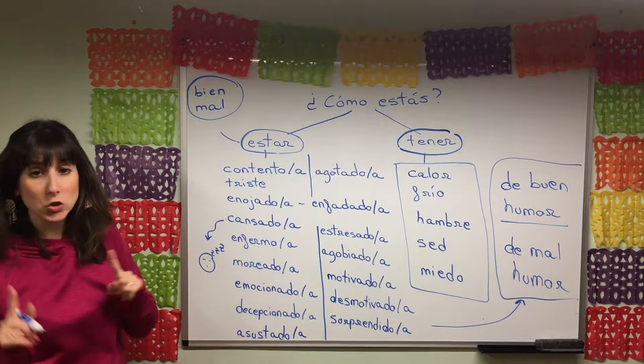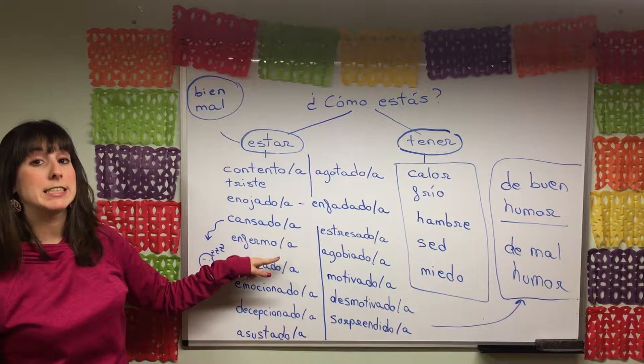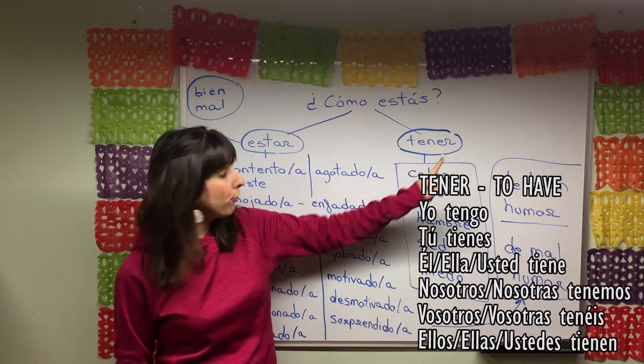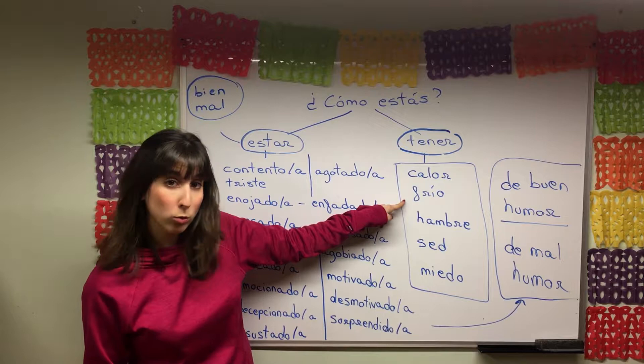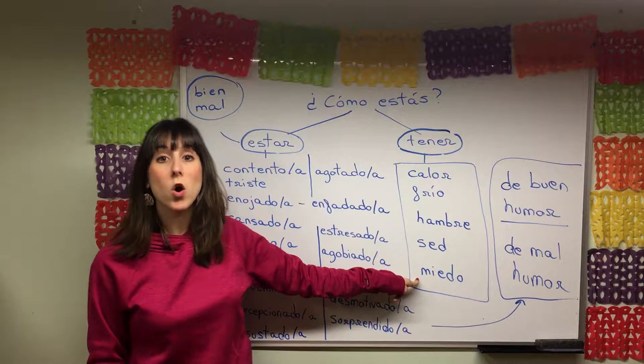Before I move on, just so that you know — all of these ones are adjectives, so estar is followed by adjectives. Tener is going to be followed by nouns. In English we would still use to be — to be hot, to be cold, to be hungry, to be thirsty, to be scared.